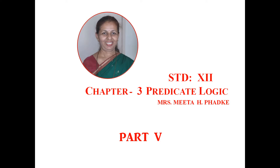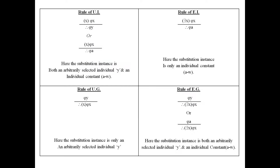Besides this we have more rules based on the rules of replacement: De Morgan's law, double negation, associative law, distributive law, commutative law, rule of transposition, material implication, material equivalence, tautology, and exportation. Besides these 19 rules, we have 4 more rules — universal instantiation (UI), existential instantiation (EI), universal generalization (UG), and existential generalization (EG).